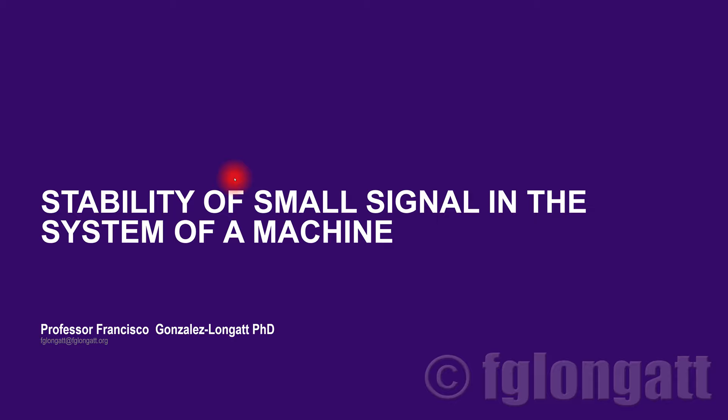That is the reason that for small signal stability we use a different approach compared with transient stability. When we are interested in transient rotor angle stability, we care about the full differential equation — the swing equation — and inside the swing equation there is a term related to electrical power: the power angle equation, which contains a nonlinear term.